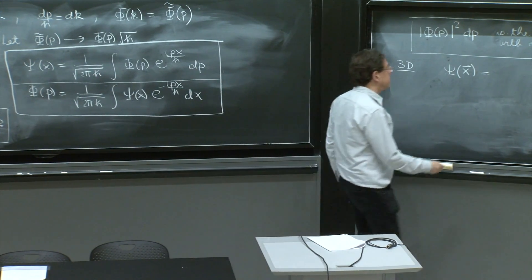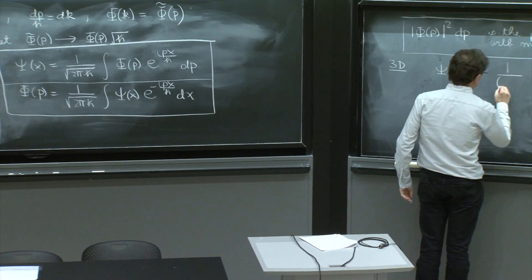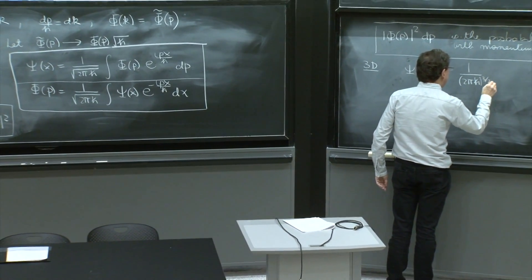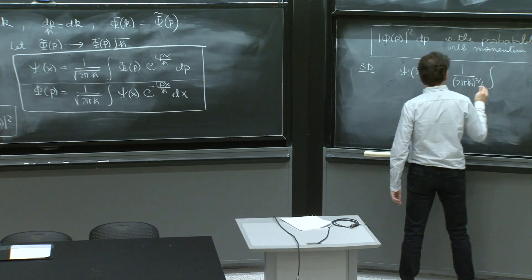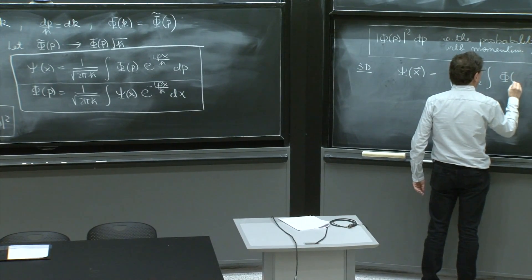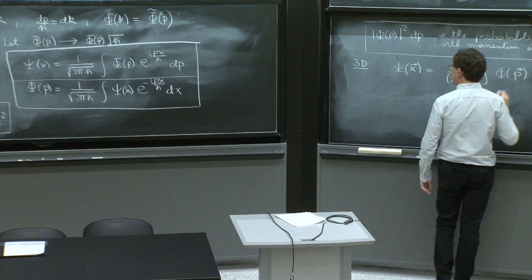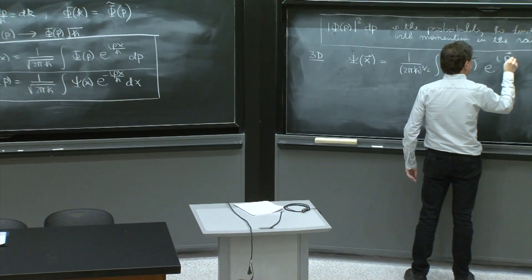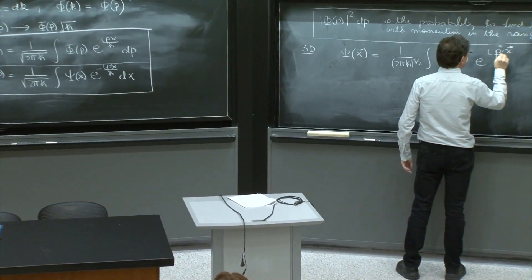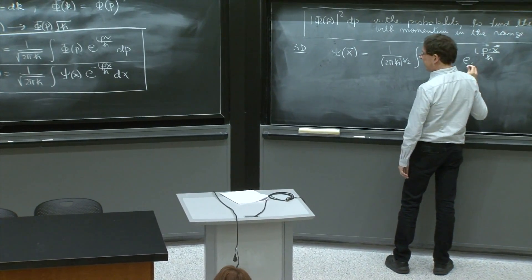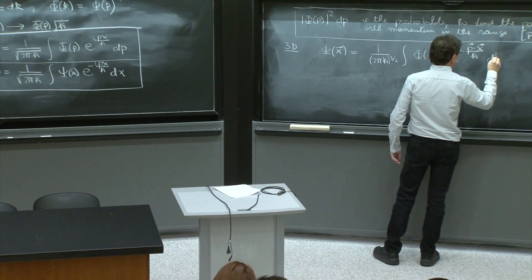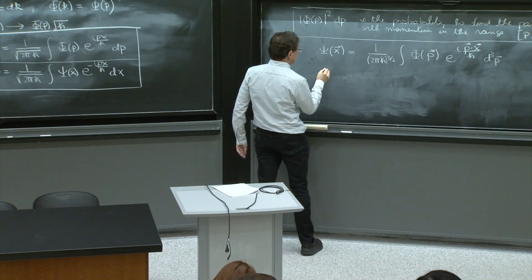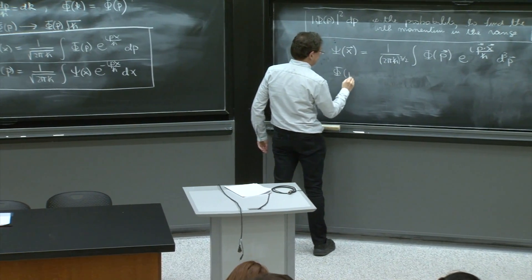this factor appears three times. So actually, it's 2 pi h bar to the 3 halves integral phi of vector p e to the i vector p